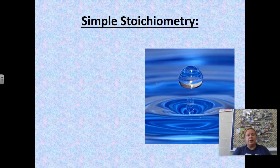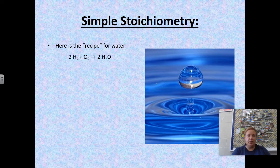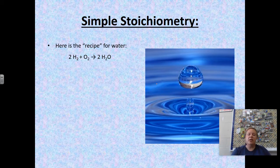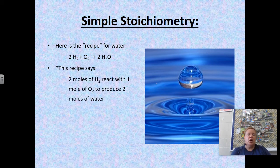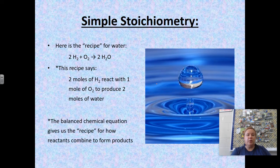Here's some simple stoichiometry when you think about drops of water. Here's the chemical recipe for water: we take hydrogen gas and bubble oxygen gas into it. This is not an easy real-life process — we have to add electricity and all that. But the recipe says we take two moles of hydrogen gas and react it with one mole of oxygen gas to produce two moles of water. Those numbers — two, one, and two — are the coefficients in the balanced chemical equation, which gives us the recipe for how reactants combine to form products.